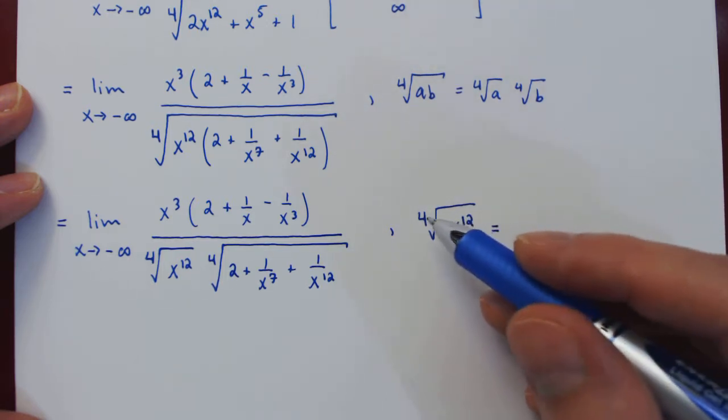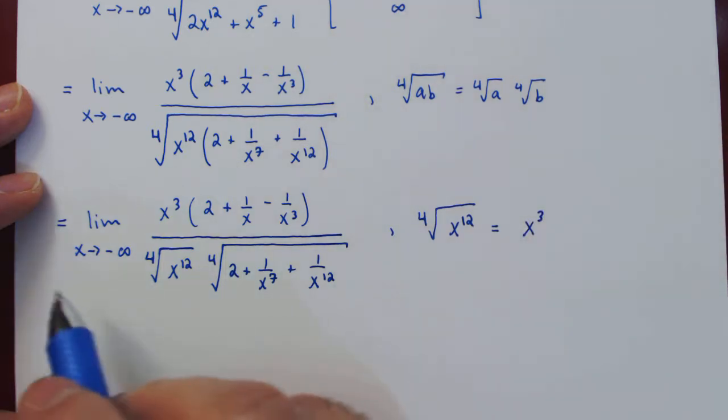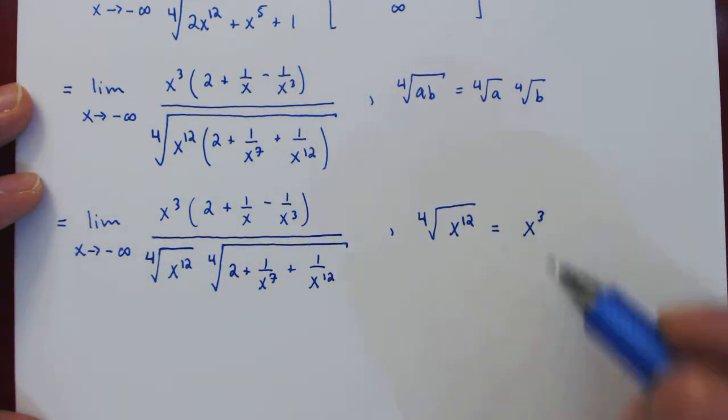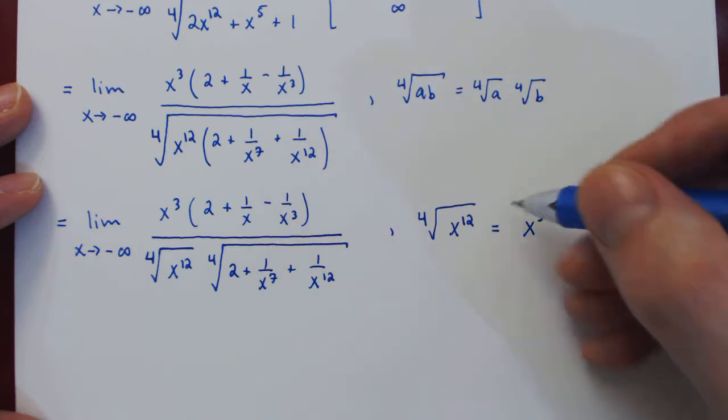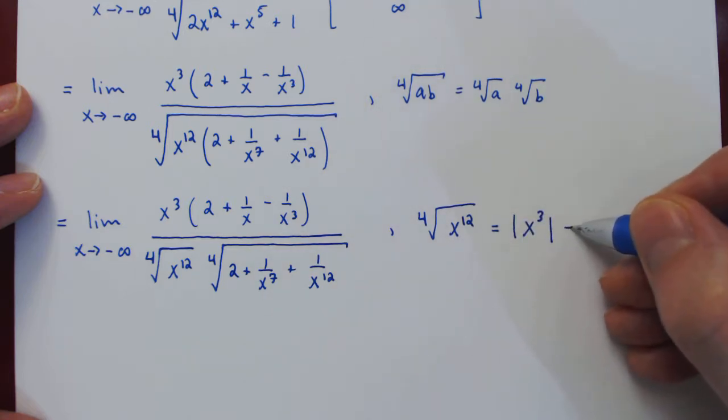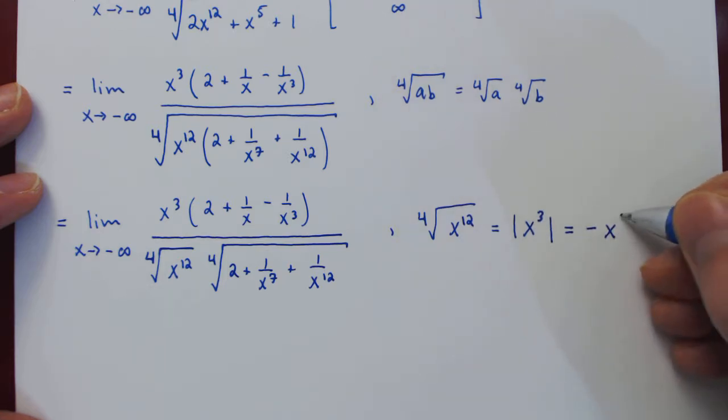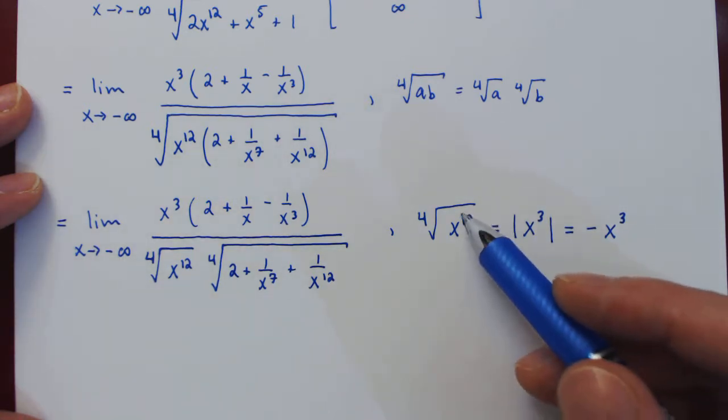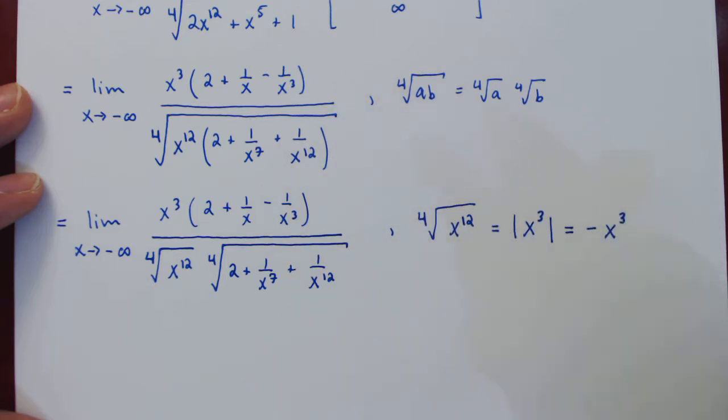But then if you look at 12 over 4, this is 3. So you would think, well, x³. But since 3 is an odd number and x is negative, x³ is also negative. But it has to be positive because we have an even power and an even root. So this is not x³, but x³ in absolute value. And how do we make something negative positive? We simply negate the negative, and it now becomes positive. So because x is negative and 12 and 4 are even numbers, the fourth root of x¹² is negative x³.